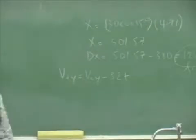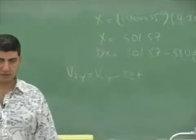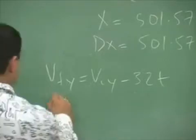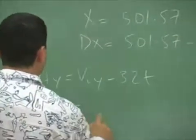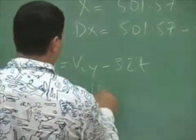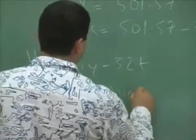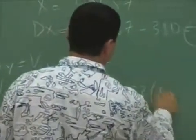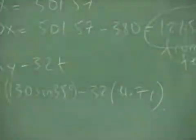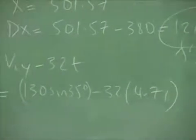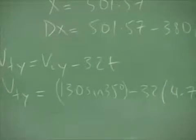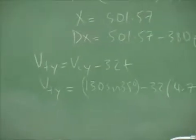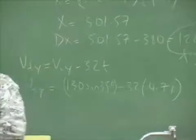So we'll use the first equation. V final y is equal to V initial y minus 32t. Minus 32 times 4.71. So that will give you the final y component of the velocity.